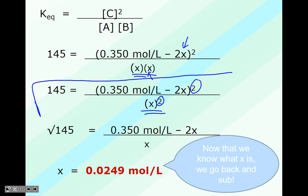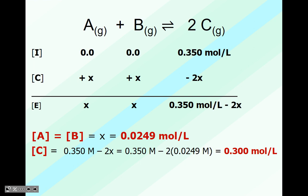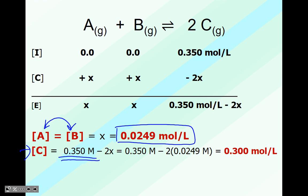Once we solve for x using algebra, we get an answer of 0.0249 moles per liter. Now that we know what x equals, we go back into our ICE table and plug in all our x values. Species A and species B are the same due to the one-to-one ratio, so both get a value of 0.0249. For C, it's 0.350 minus 2x, so we subtract 2 times 0.0249 from 0.350 to get 0.300 moles per liter.